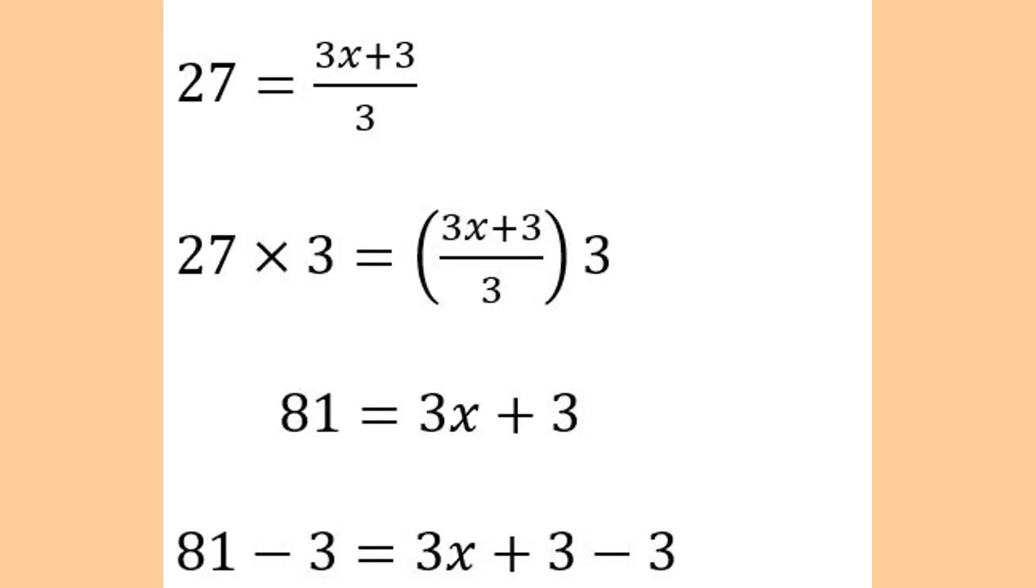When we simplify, our new equation becomes 27 equals 3x plus 3, everything divided by 3.